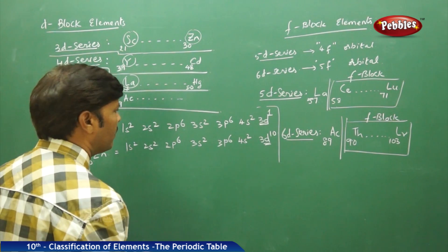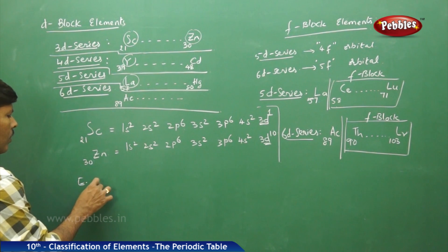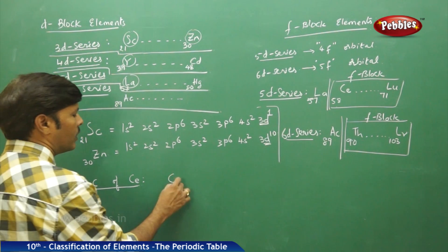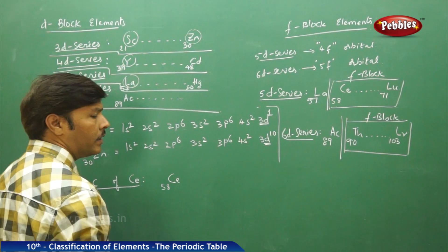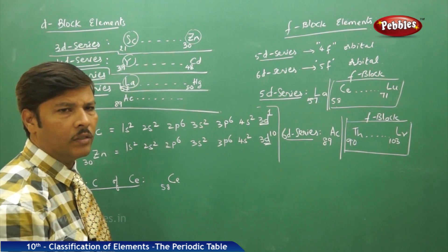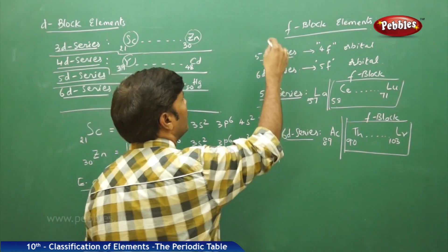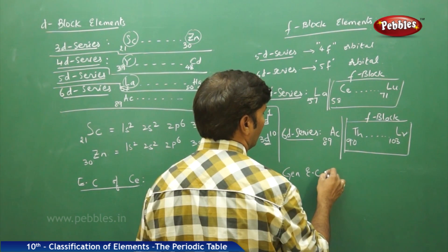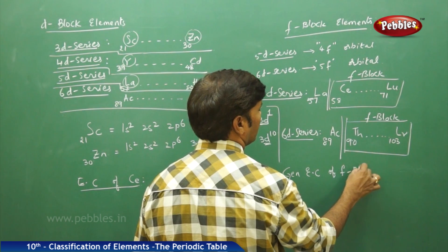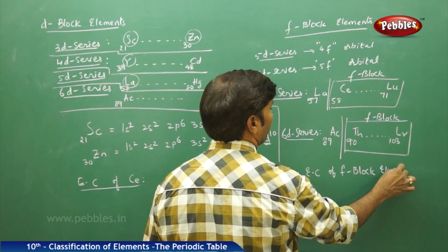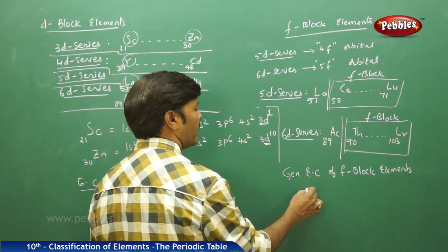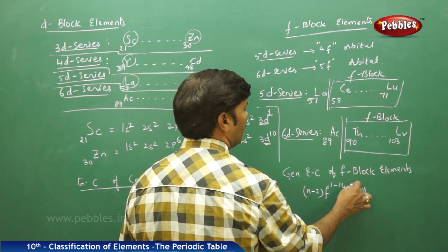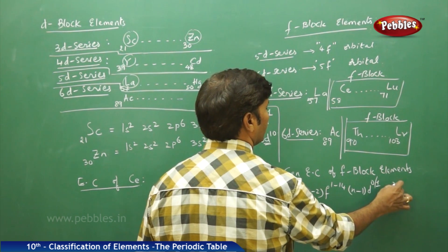The electronic configuration of cerium (atomic number 58): the general electronic configuration of f-block elements is (n-2)f 1-14, (n-1)d 0 or 1, ns2. For cerium, the nearest noble gas is xenon (atomic number 54).